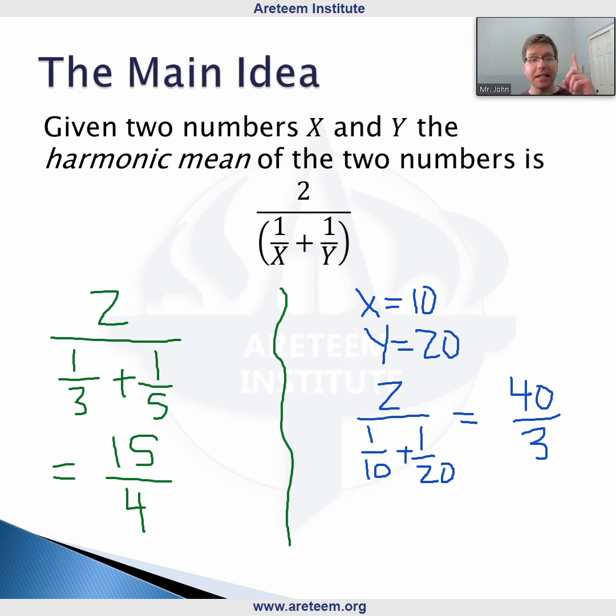Now, we saw one example, average speed for a round trip, where it's the same distance both ways. The average speed is the harmonic mean. But why don't you see if you can come up with some other explanations of where the harmonic mean would come up. And let us know in the comments below.